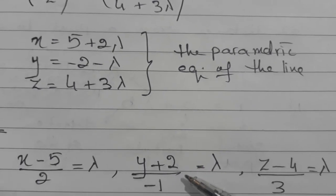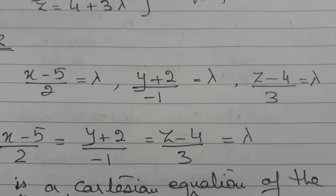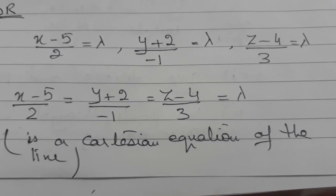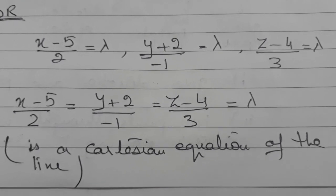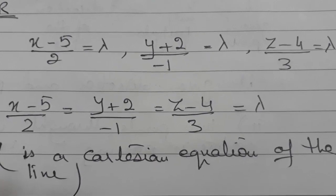And after that, if you make lambda a subject from each, then the form you will get is called a Cartesian equation of the line. So you have seen three forms of the vector equation of the line, parametric and Cartesian equation of the line.